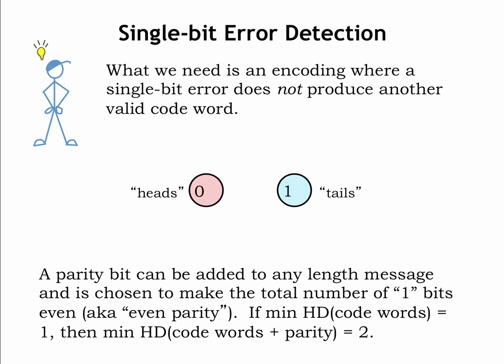For example, our original encoding for heads was 0. Adding an even parity bit gives us 0,0. Adding an even parity bit to our original encoding for tails gives us 1,1. The minimum hamming distance between codewords has increased from 1 to 2.